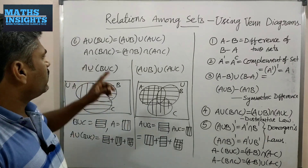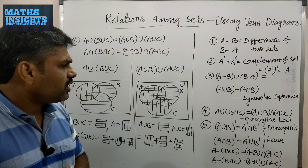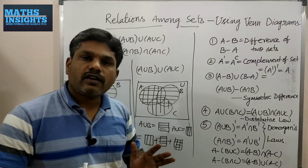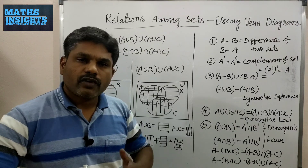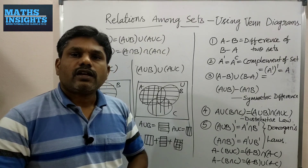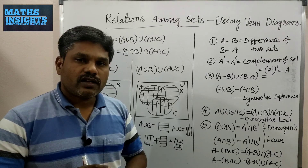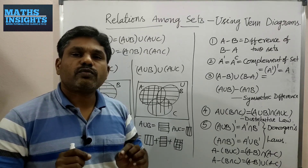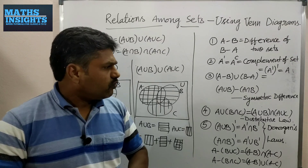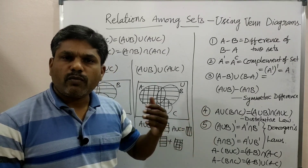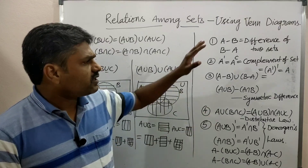Observing both diagrams, the areas are equal, so we conclude that A∪(B∪C) equals (A∪B)∪C. In this way you may use Venn diagrams to establish the relation between any two sets. If you like this video please subscribe to the channel and press the bell icon for notifications. We will have a problem session to solve problems based on these concepts.